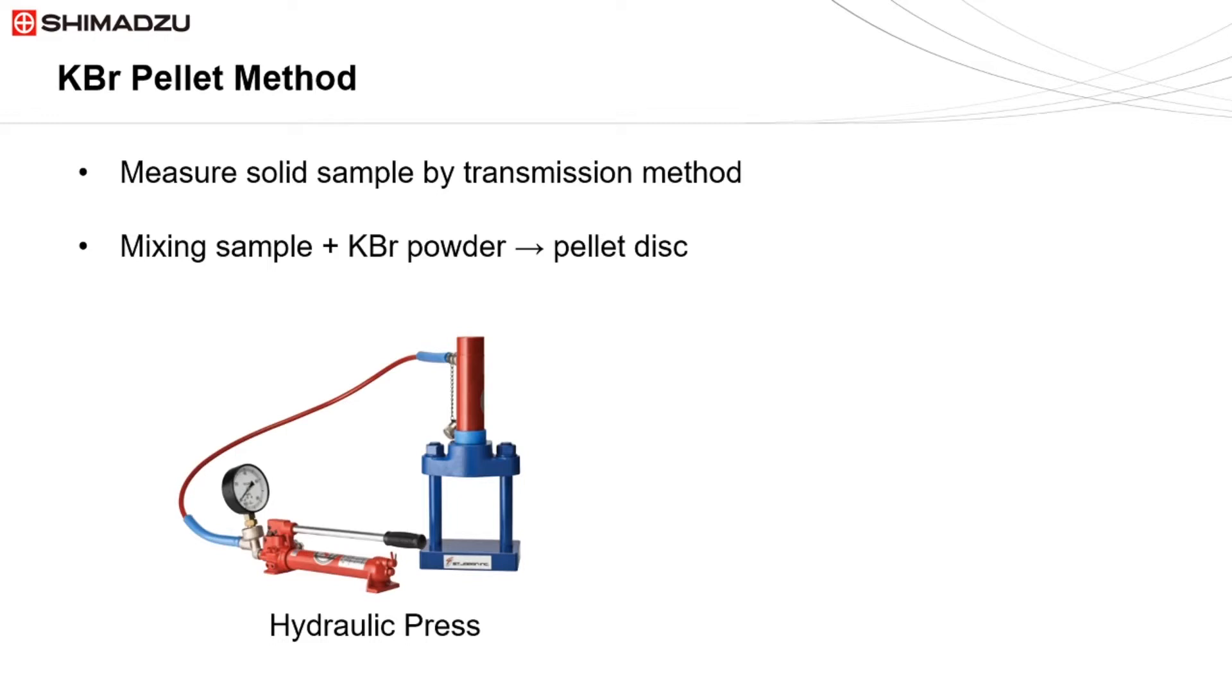Alternatively, we can create smaller diameter pellet discs, such as a 4 mm disc by using a hand press, such as the MHP-1 accessory.